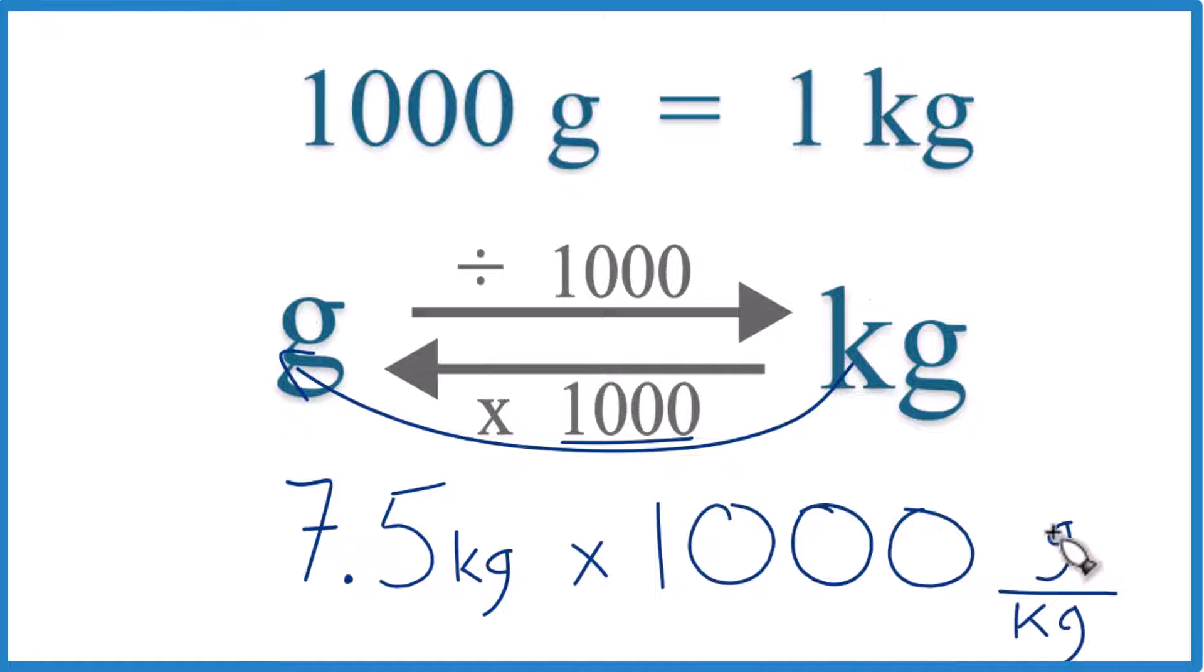And note that that's 1,000 grams per kilogram, just like we have up here. This is our conversion factor. When we multiply, kilograms on the top and the bottom, they cancel out, we're left with grams. That's what we're looking for.